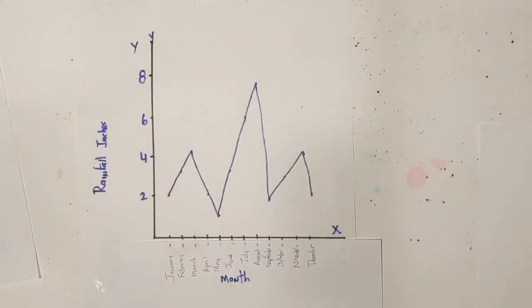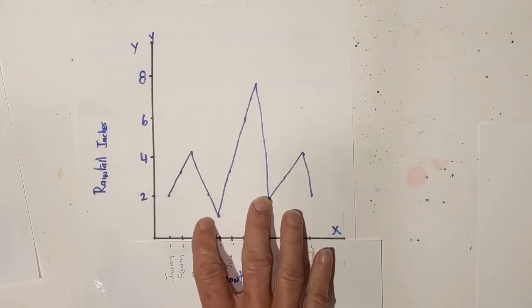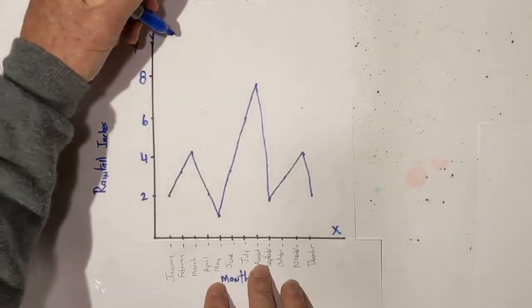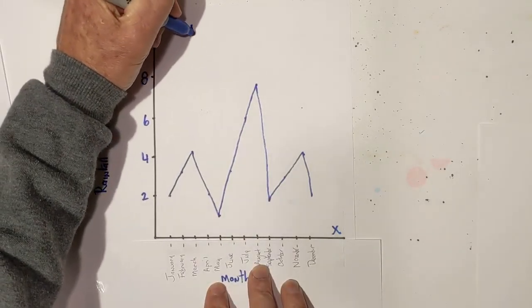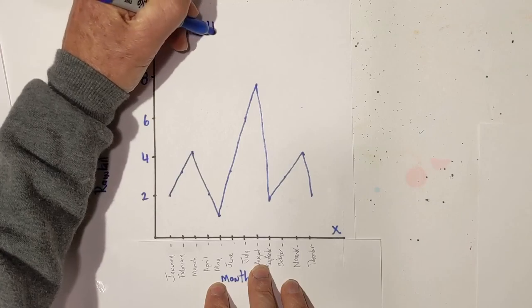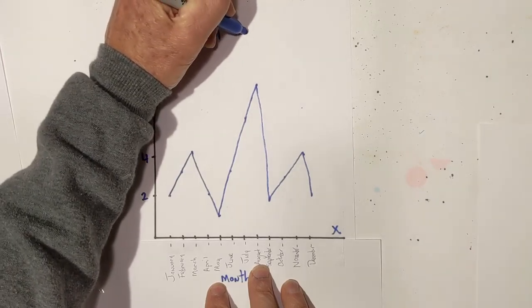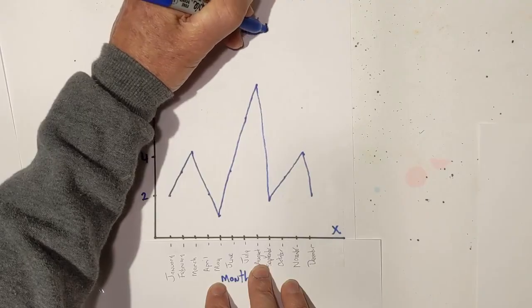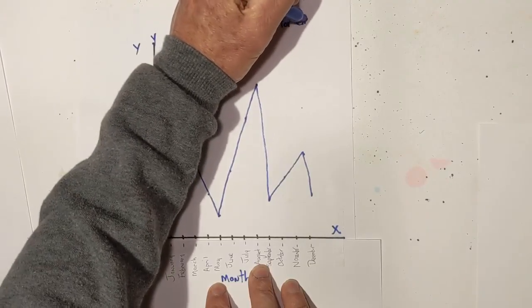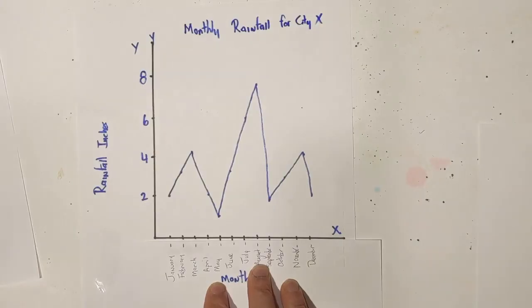The last thing we need to do is title it, and I would probably title this monthly rainfall for city X.